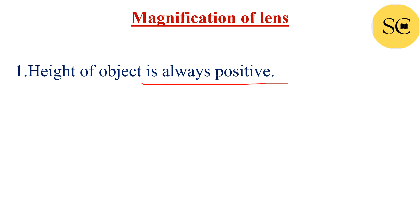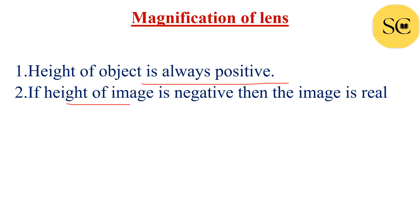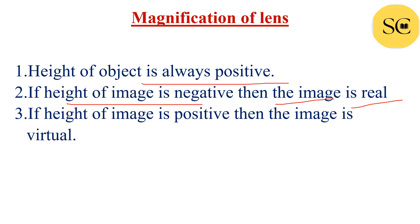Height of object is always positive — we have already discussed this in the case of mirrors — because the object is always placed at the left side of the lenses. According to sign convention, height of object is always positive and the object is placed over the principal axis. If height of image is negative, then the image is real and inverted. If height of image is positive, then the image is virtual and erect. Note down and learn these points.